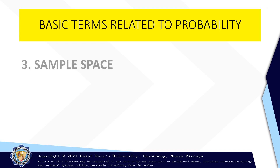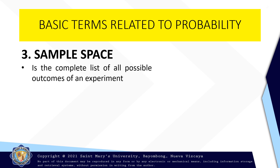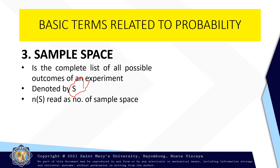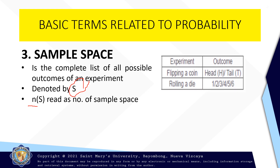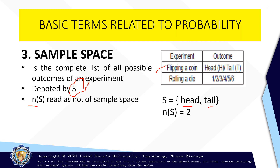We have the third basic term related to probability, which is called the sample space. Sample space is the complete list of all possible outcomes of the given experiment. In mathematics, it is denoted by a capital letter S. We also have this symbol, read as the number of sample space. For example, the experiment is flipping a coin. The sample space here is just head and tail, so the number of sample space is two.